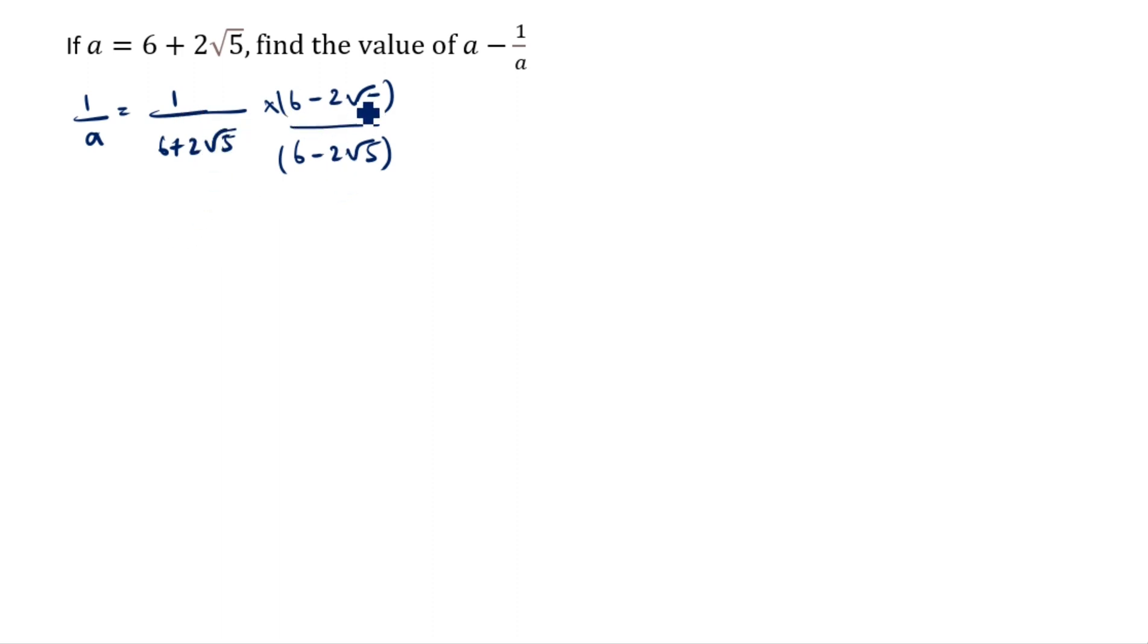Now how we will write this one? 6 minus 2 root 5. a plus b, this one, this is a minus b. What is a plus b, a minus b? It is equal to a square minus b square.